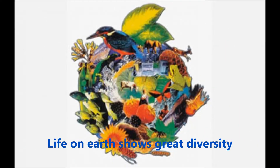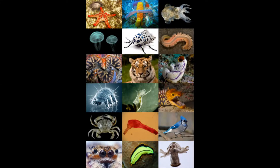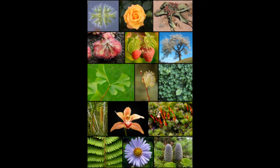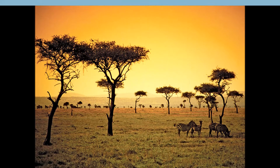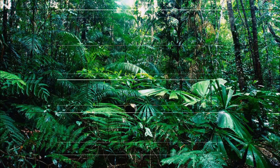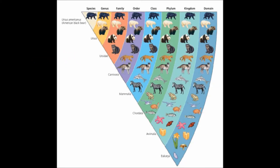Life shows great diversity. The term life contains a lot of definitions — there are animals, plants, bacteria, and microbes, and there are tremendous kinds of species in each classification. They diversified to adjust to the various environments they live in. These have been generated through 4 billion years, and now it is said there are 30 million species on the planet.